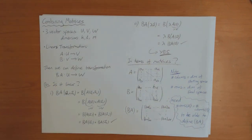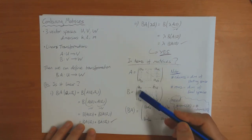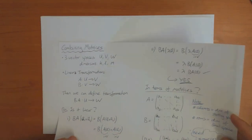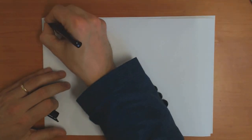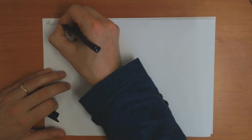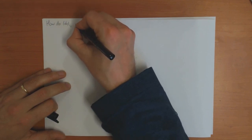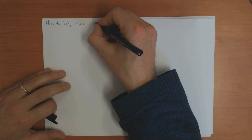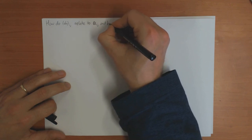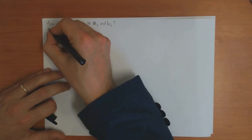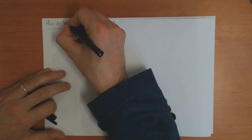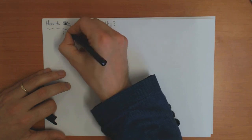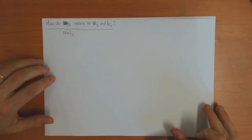So let's answer the main question: what is BA_IJ in terms of A_IJ and B_IJ? How does the component BA_IJ relate to the entries of A and B?